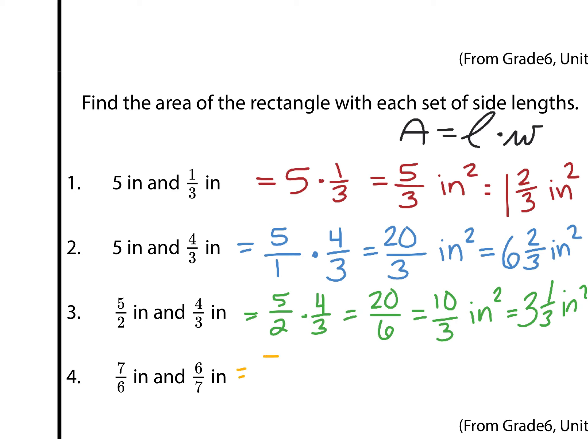And lastly, we have seven-sixths and six-sevenths. That's just going to be forty-two over forty-two, which is simply one square inch.